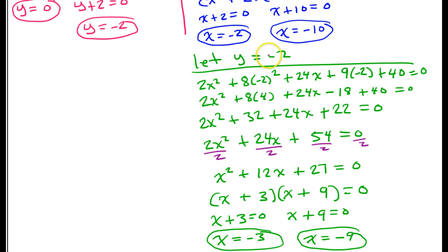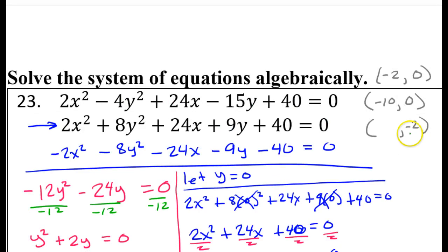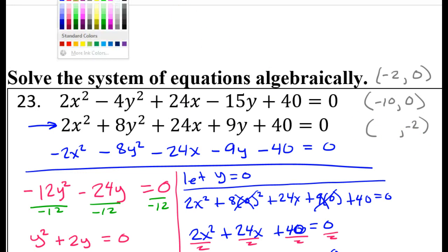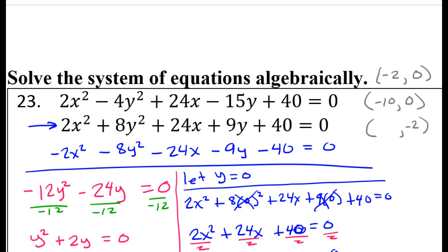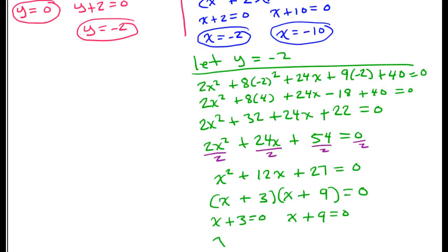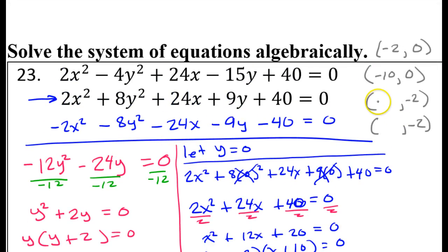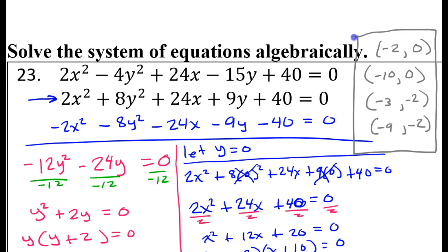I had one y value of negative 2 that gave two separate x values, but I only have negative 2 written once, so I need to write it again. So I have something comma negative 2 and another something comma negative 2. Those numbers were negative 3 and negative 9, giving negative 3 comma negative 2 and negative 9 comma negative 2. So these are the four solutions to the system.